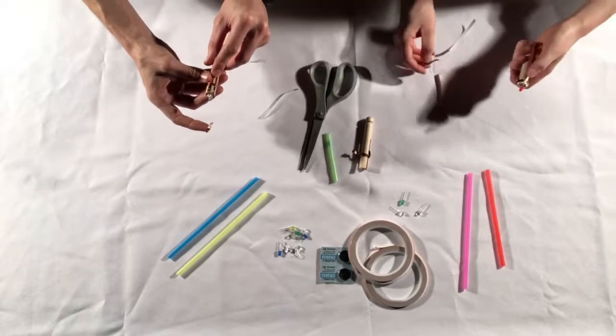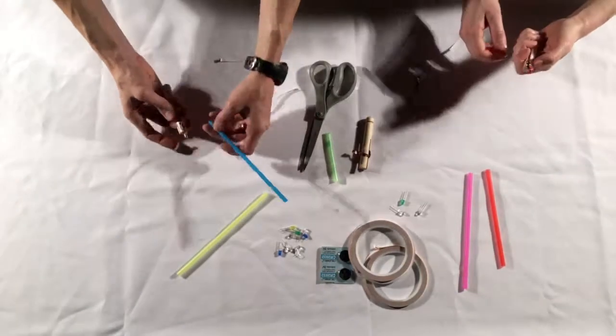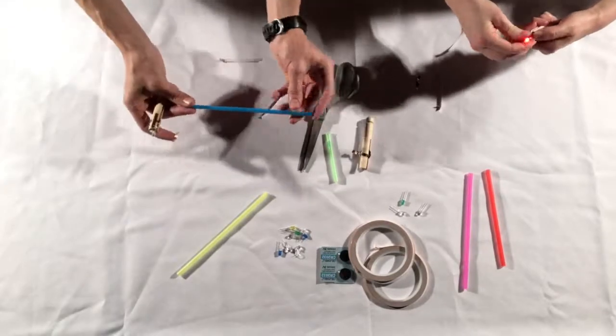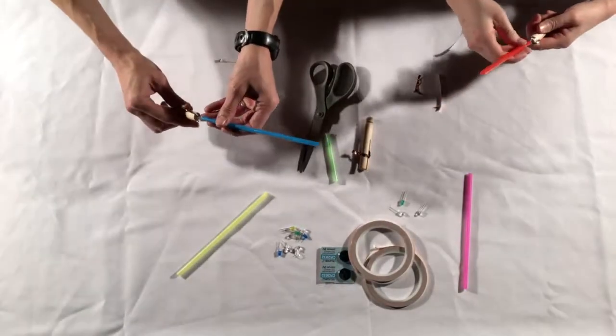As a final step, we'll take whatever color neon straw you like and slide it over the LED, and if you can, fit it into the clothespin itself. That'll hold it in place.